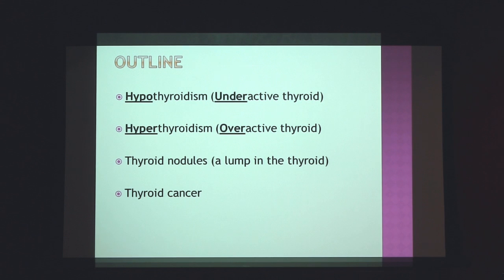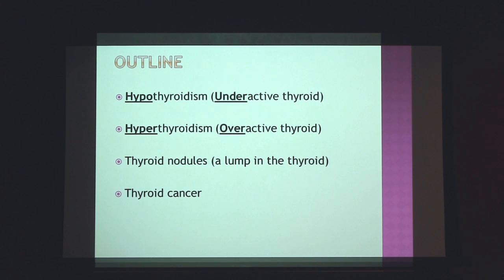Thyroid disease comes in many different forms. What I thought we would cover is the spectrum of hypothyroidism, which is defined as an underactive thyroid — the thyroid is not making enough thyroid hormone. Then we'll move on to cover hyperthyroidism, in which the thyroid is making excess thyroid hormone. Then we'll move into thyroid nodules, which are defined as lumps or bumps within the thyroid gland. And then finally end with thyroid cancer.